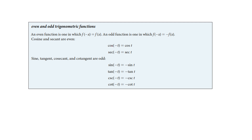Remember that cosine is an even function, which means if you put in negative x, you get right back to where you started. So cosine is even, and anything based solely on cosine will also be even — so secant is going to be even. Sine turns out to be odd: if you put in a negative x, or in this case negative t, you get the same thing but just with a negative out front.